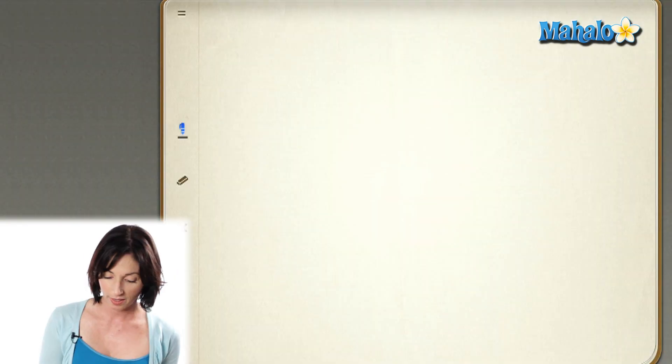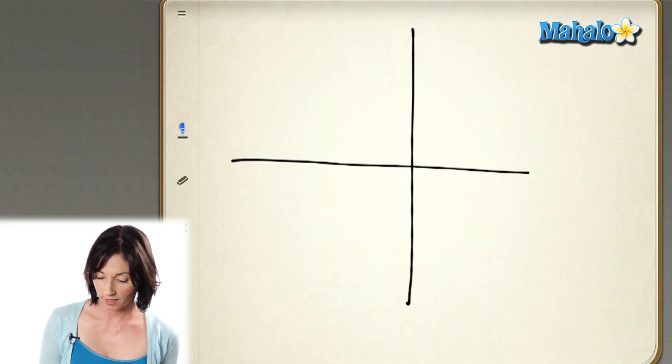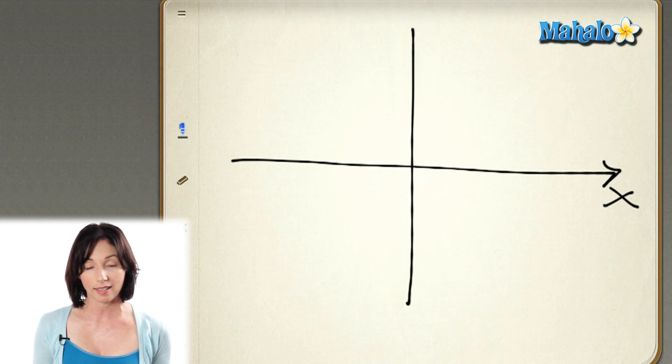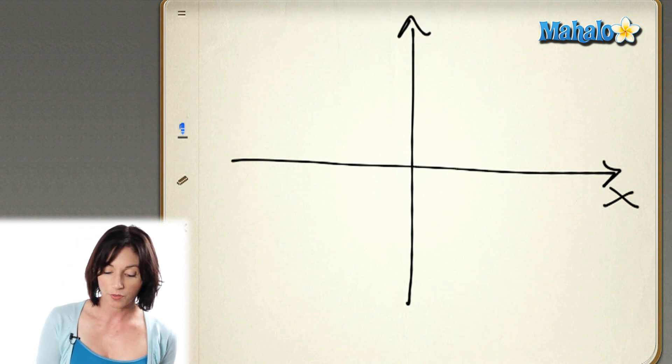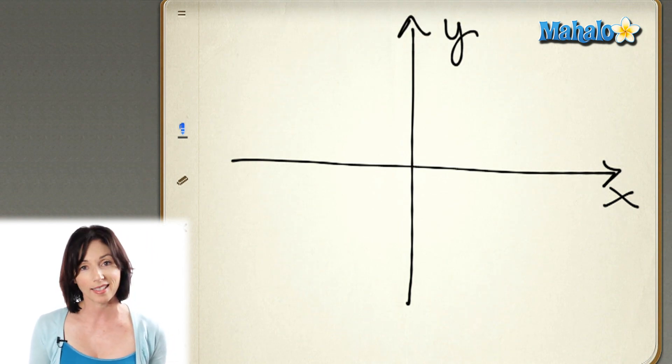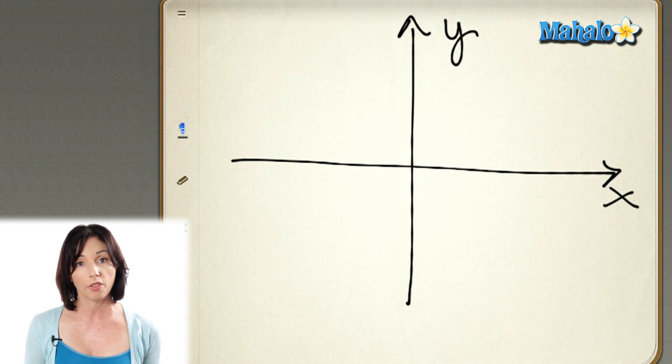Now, when you do a graph, you use what's called a pair of coordinate axes. They look like this. The horizontal axis is the x-axis, and the vertical axis is the y-axis. And they meet at a point called the origin.